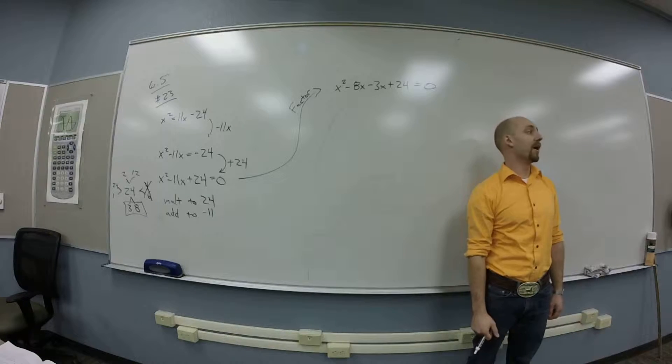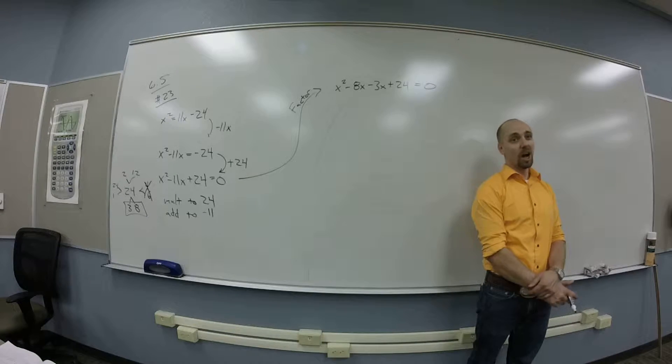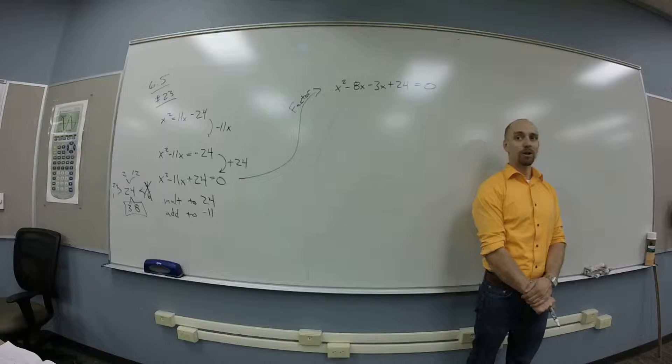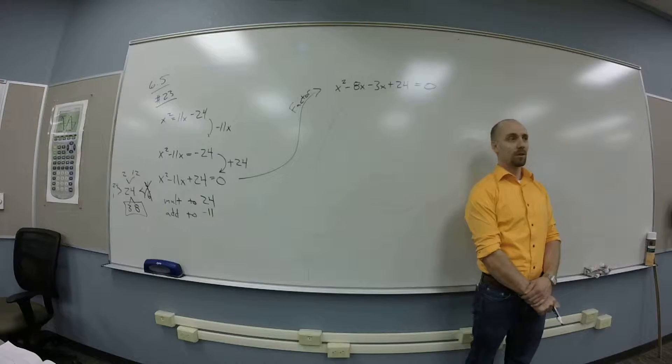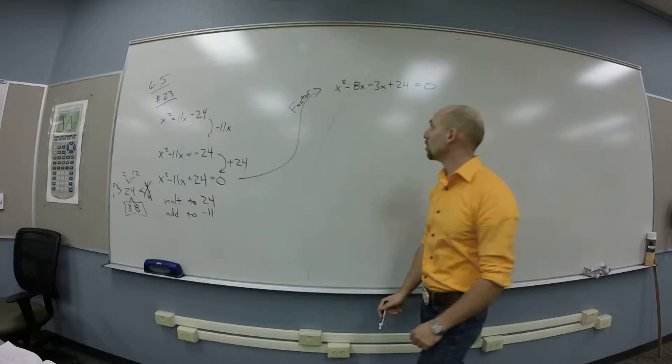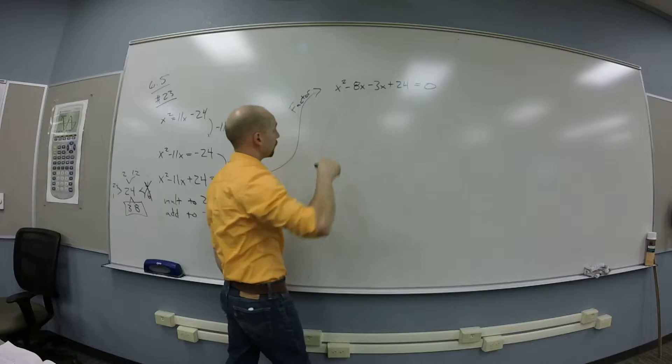But if I was to do the AC method on this because, I don't know, I forgot or whatever, how do I do the AC method on this? How do I finish this thing off? You want to factor out? Okay, I've got to factor by grouping. So what can I factor out of the first bit?